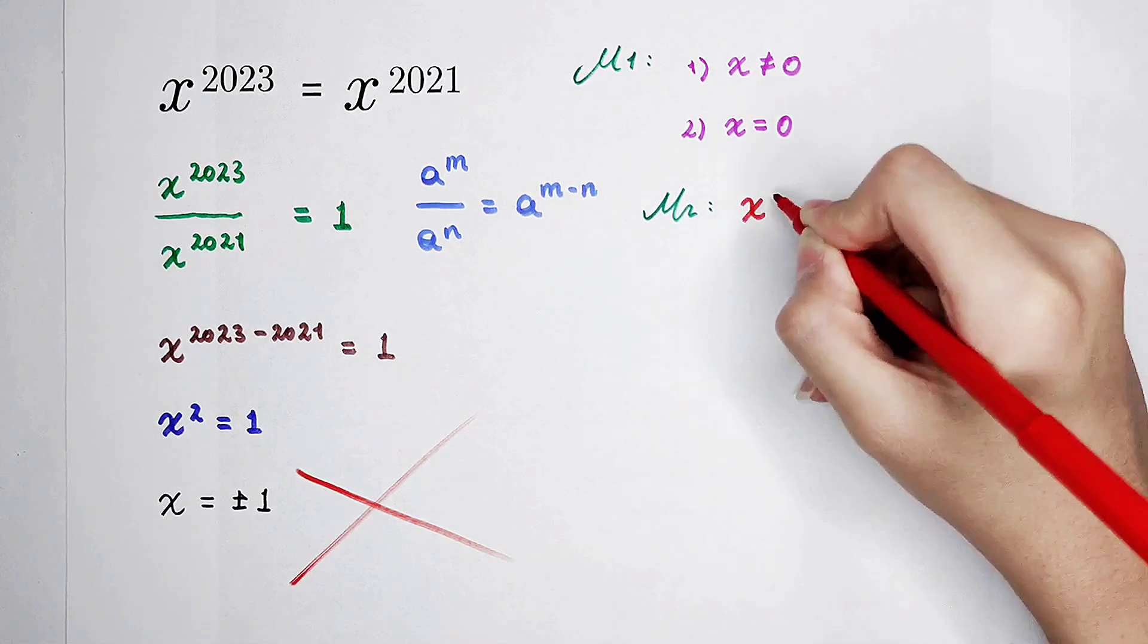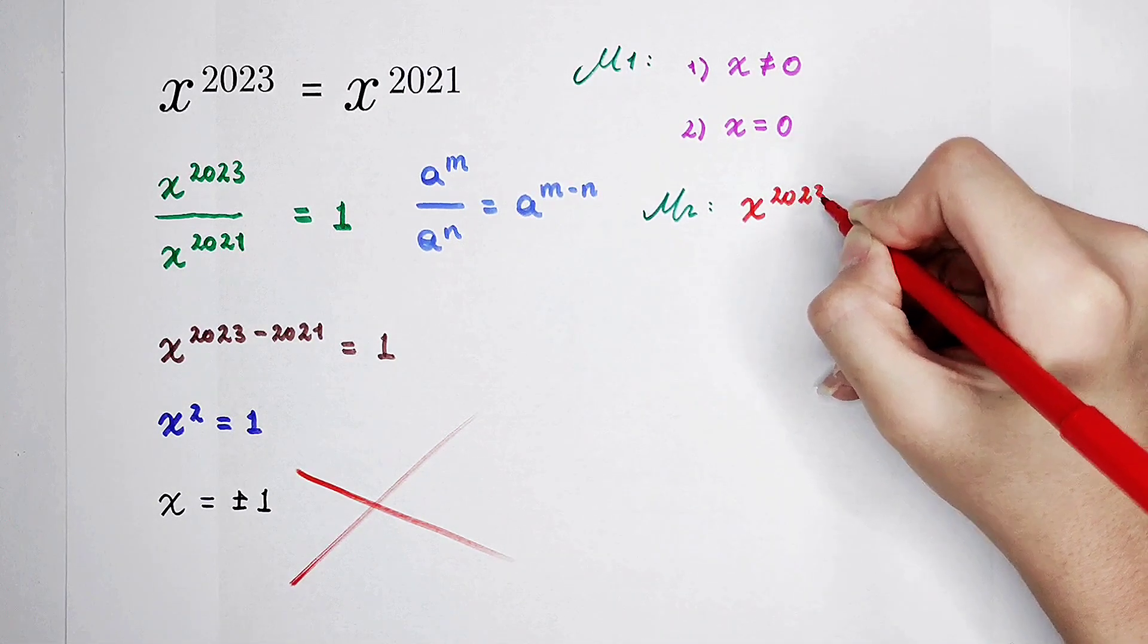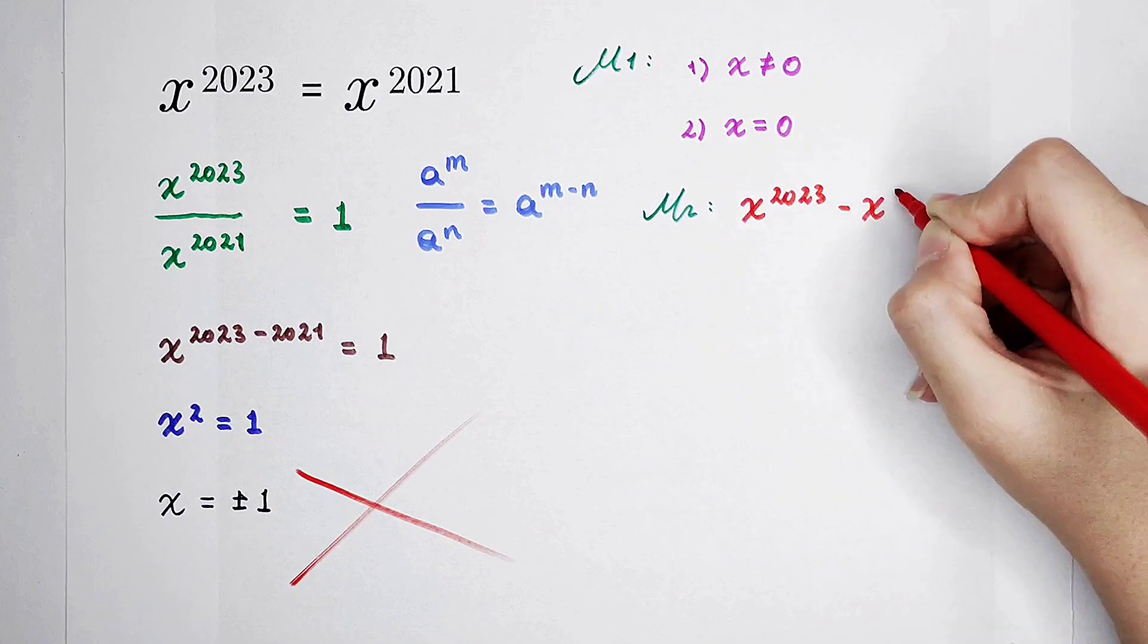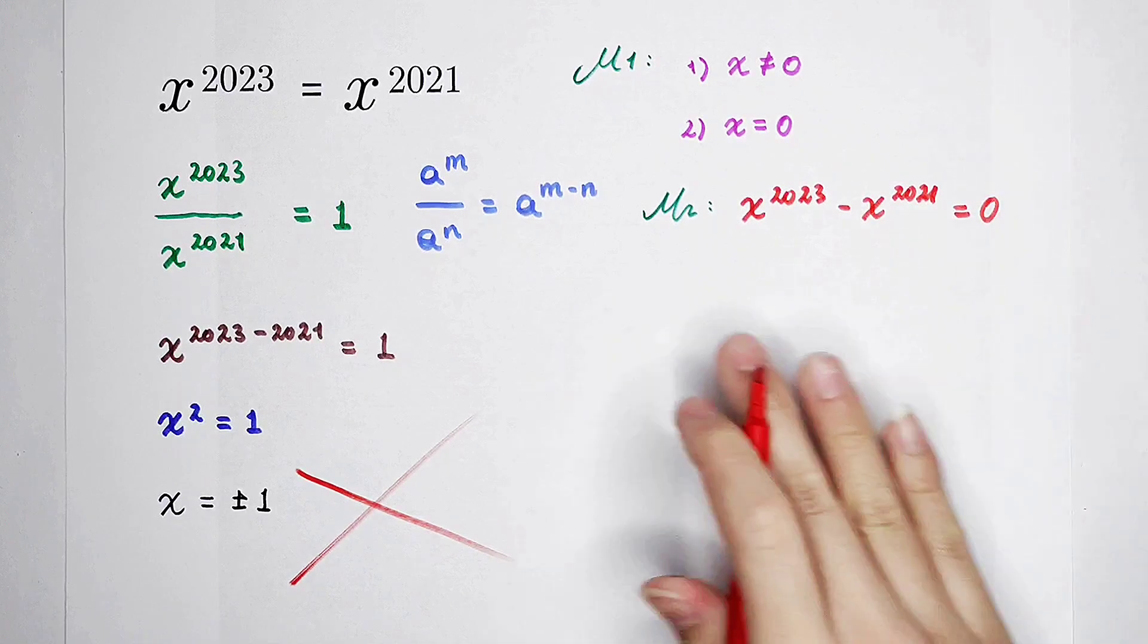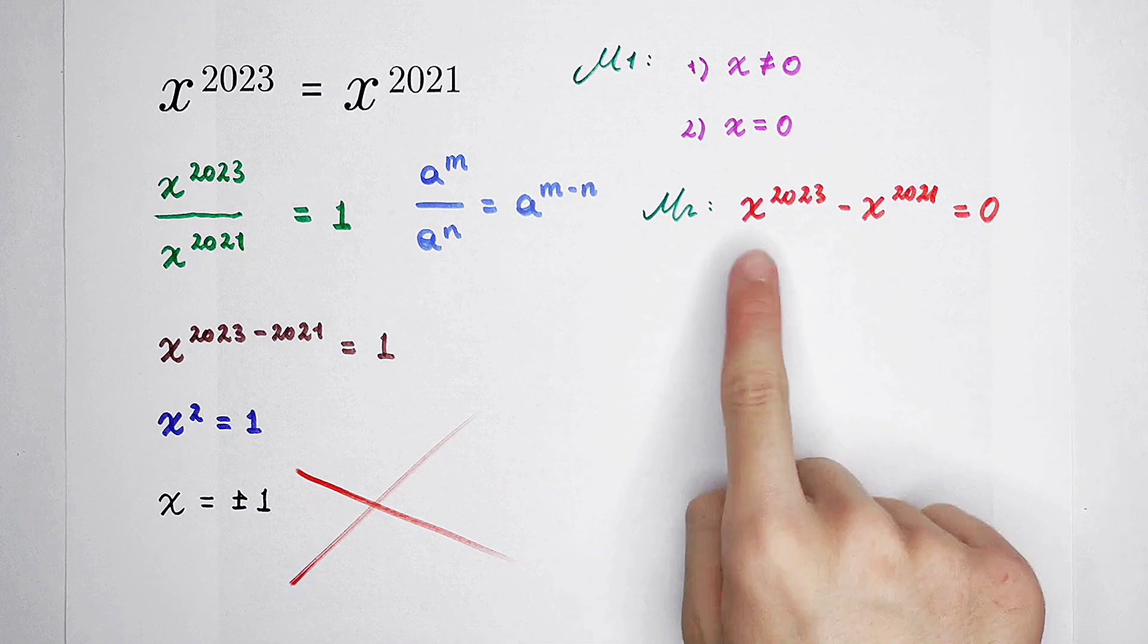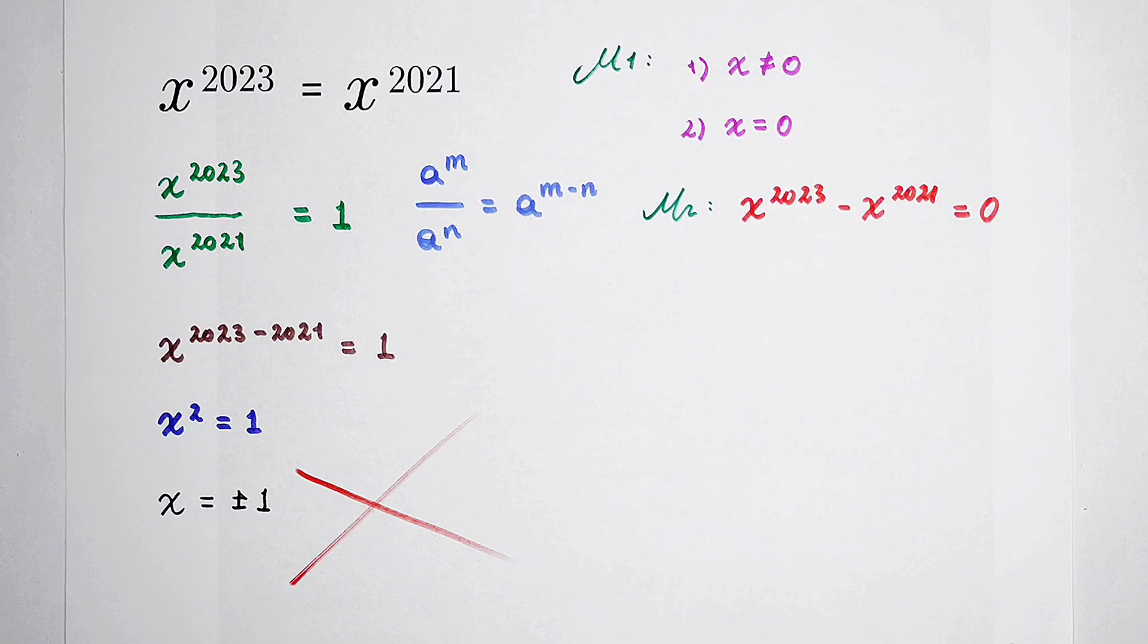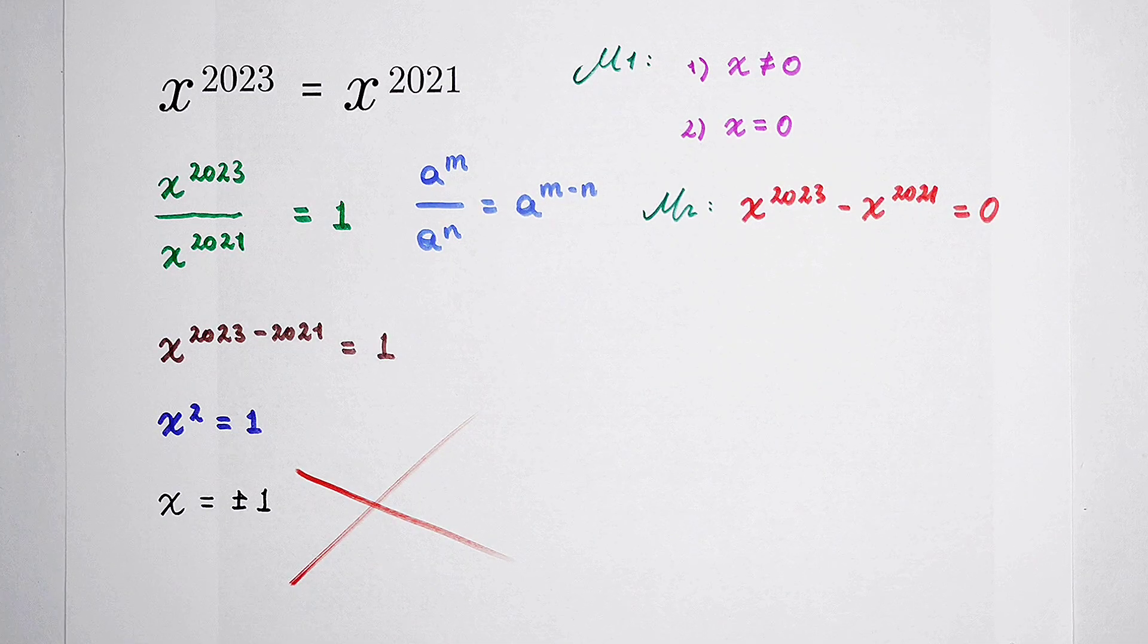First, subtract x to the power of 2021 from both-hand side. And you can get this one minus this one is 0.